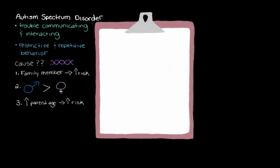If we suspect that a child might have Autism Spectrum Disorder, how might we go about confirming or diagnosing it? Well, for Autism Spectrum Disorder, there really isn't a test like a blood test or a scan that we can use to make the diagnosis. So what we have to do instead is really look for the signs of Autism Spectrum Disorder.